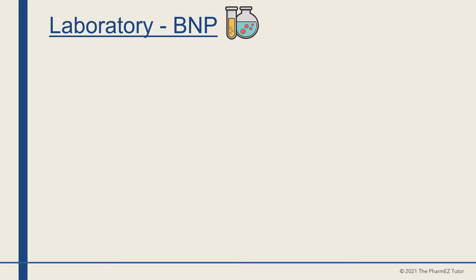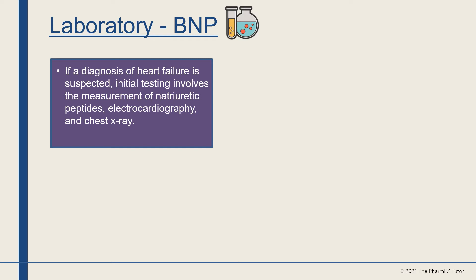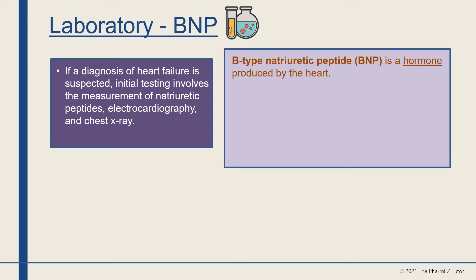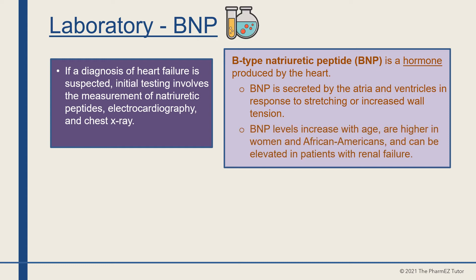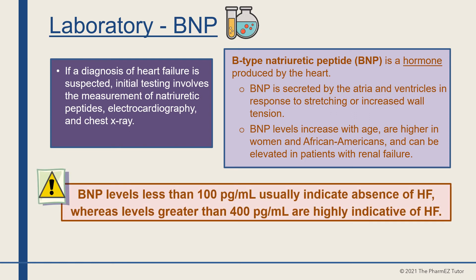Regarding laboratory values in heart failure: if a diagnosis is suspected, initial testing involves the measurement of natriuretic peptides, electrocardiography, and chest x-ray. B-type natriuretic peptide, or BNP, is a hormone produced by the heart, secreted by the atria and ventricles in response to stretching or increased wall tension. BNP levels increase with age, are higher in women and African Americans, and can be elevated in patients with renal failure. BNP levels less than 100 picograms per mL usually indicate an absence of heart failure, whereas levels greater than 400 picograms per mL are highly indicative of heart failure.